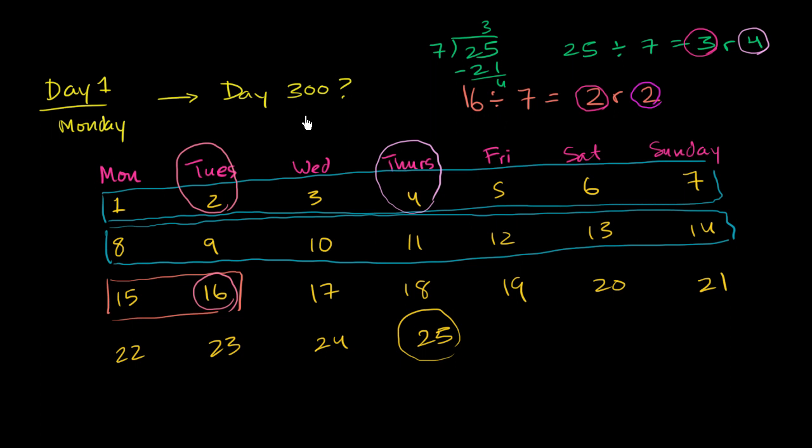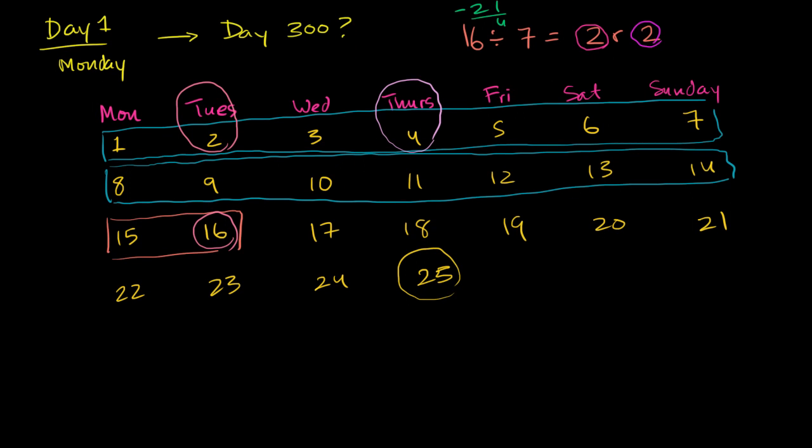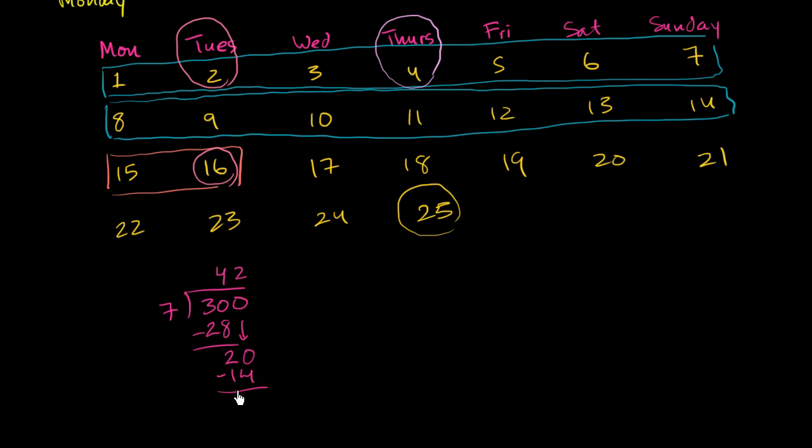Now we're ready to answer the question: what is day 300 going to be? Let's divide 300 by 7. 7 goes into 30 four times. 4 times 7 is 28. Subtract, you get 2. Bring down a 0. 7 goes into 20 two times. 2 times 7 is 14. 20 minus 14 is 6, so our remainder is 6. In its row, it's going to be the sixth entry, the sixth column. There will be 42 rows above it, but we care about which entry it is in its row. So day 300 is the sixth day of the week. It is Saturday.